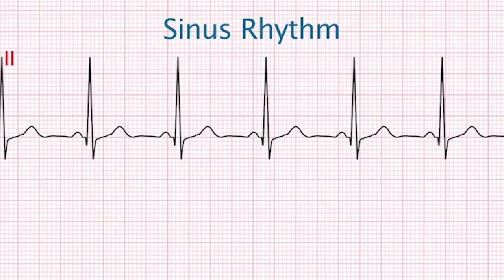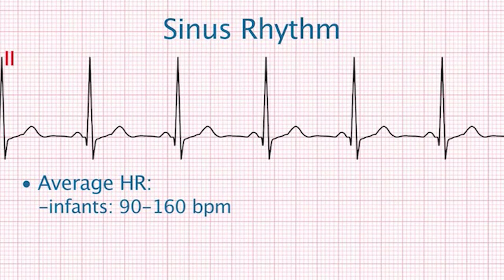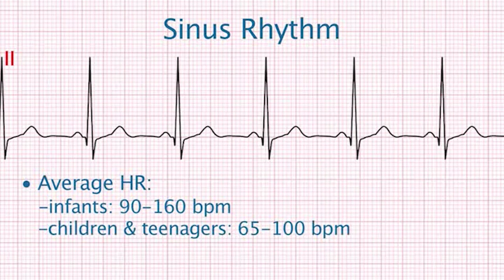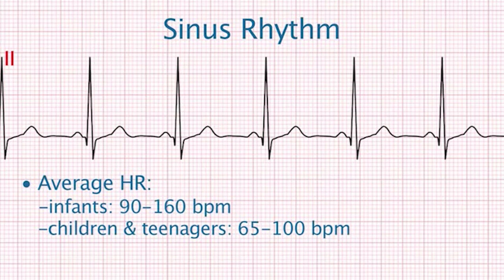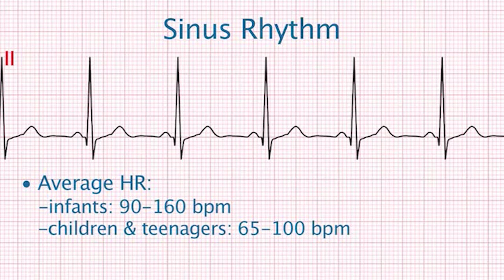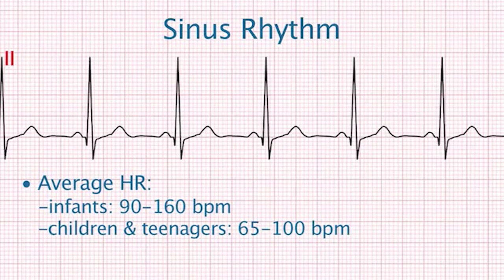The normal sinus rhythm is the normal rhythm for any age. The average heart rate for infants is 90 to 160 beats per minute, and for children and teenagers it is 65 to 100 beats per minute. Heart rates of pediatric patients vary with age, so the simple definitions of normal heart rate, tachycardia, and bradycardia used in the adult population are not applicable to the pediatric population. It is always good practice to know the age and cardiac history of your patients.